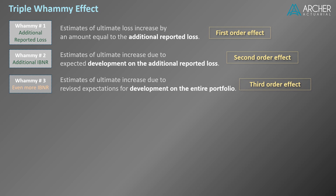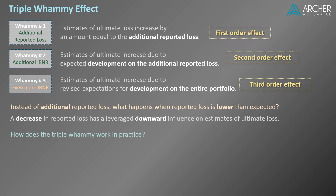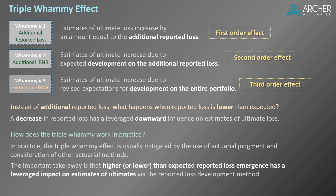Before we conclude, let's consider two important questions. Number one: instead of additional reported loss, what happens when reported loss is lower than expected? As you might expect, a decrease in reported loss has a leveraged downward influence on estimates of ultimate loss. Question number two: how does the triple whammy effect work in practice? In practice, the triple whammy effect is usually mitigated by the use of actuarial judgment and consideration of other actuarial methods. But the important takeaway is that higher or lower than expected reported loss emergence has a leveraged impact on estimates of ultimates via the reported loss development method.